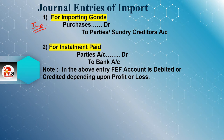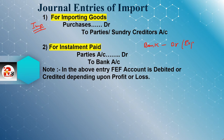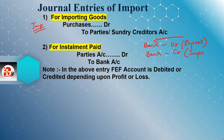For installment paid: whenever we are paying the installment, the entry will be parties account debit to bank account. In the export case, bank account is debited. Whenever we are receiving the installment, bank account will be debited to export sales. For import payment, bank account is credited.